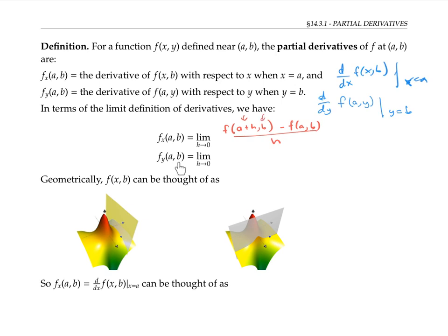If we want to do f_y(a,b), that's the limit as h goes to zero of [f(a,b+h) minus f(a,b)] over h, because now we're holding x constant at a and letting y vary.